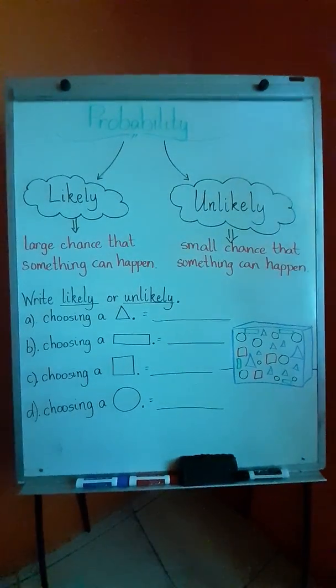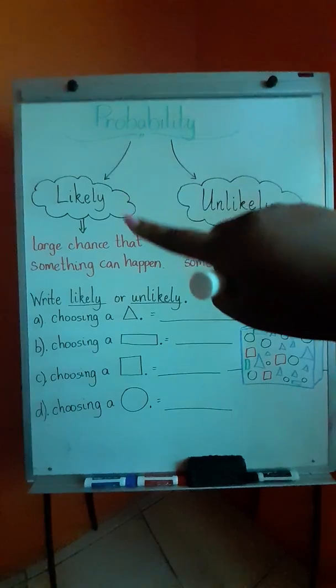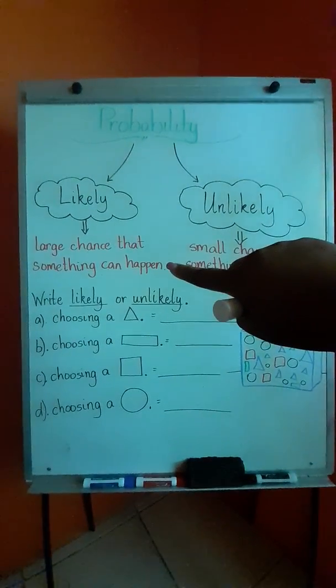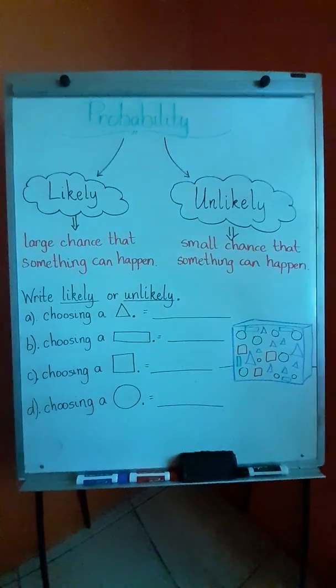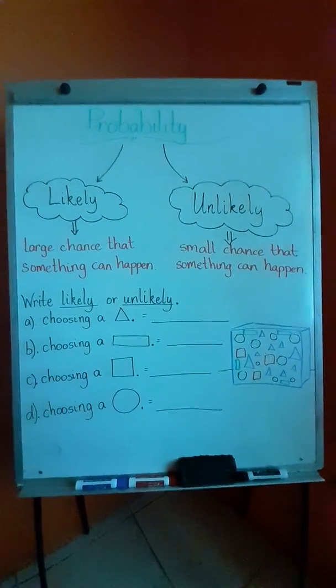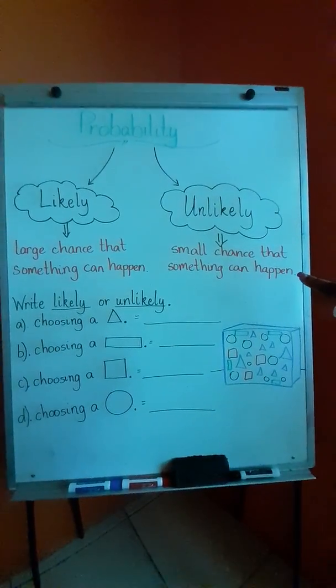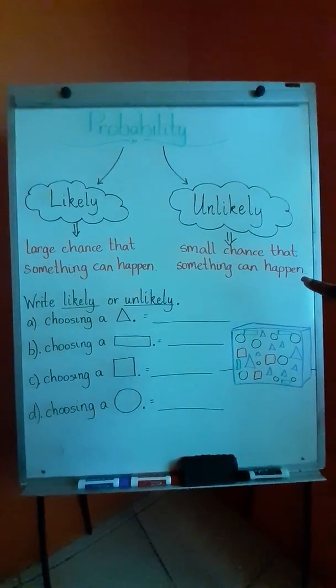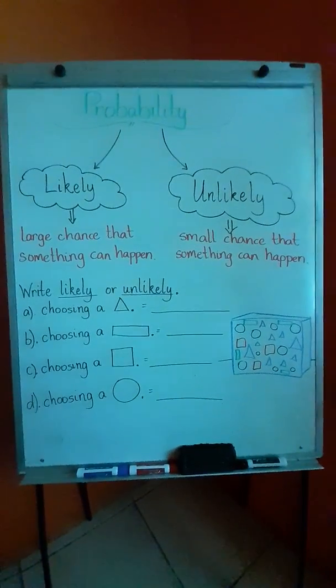But instead we're going to focus on likely and unlikely. When we use the term likely, we are saying that it's a large chance that something can happen. When we use the term unlikely, we are saying that it is a small chance of something happening.